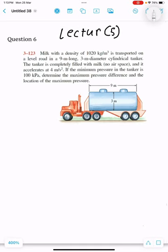The question: milk with density of 1020 kilogram per meter cubed is transported on a level road in a 9 meter long and 3 meter diameter cylindrical tanker. The tank is completely filled with milk, no airspace.